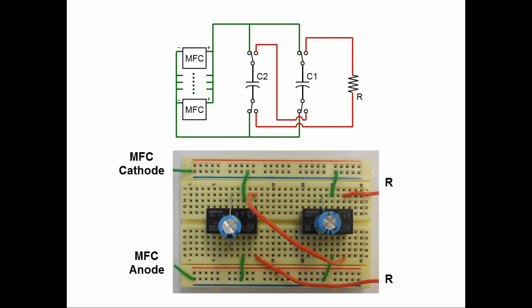Let's take a look at the switches. With the given switch positions, the capacitors are connected to MFCs and disconnected from the external resistance. So I'm going to remove the external resistance part, the red lines, to make the diagram even simpler.